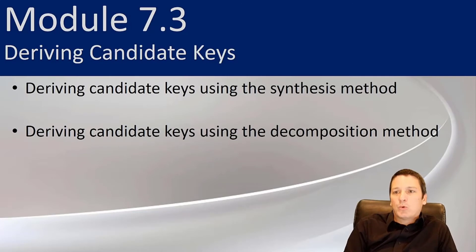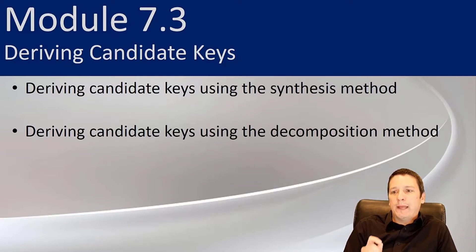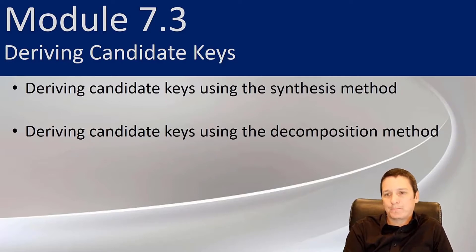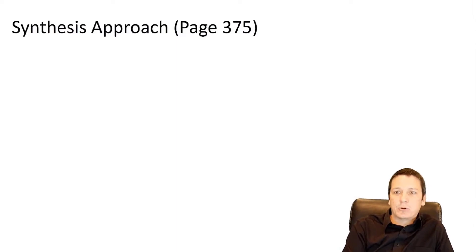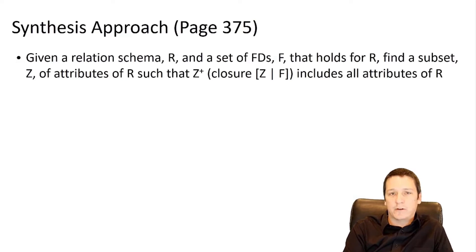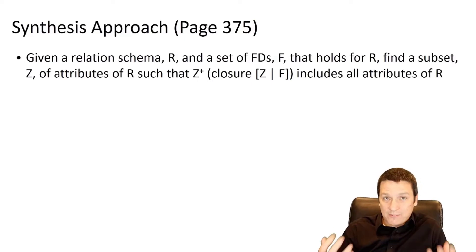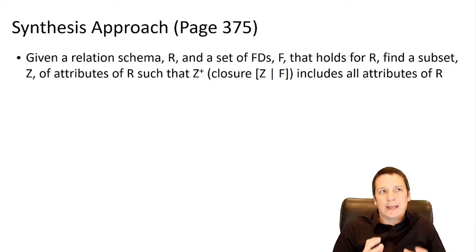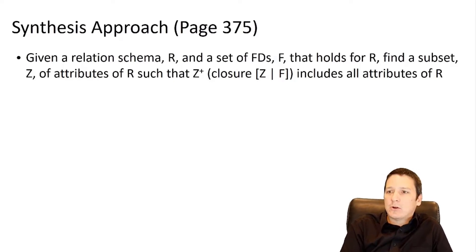In module 7.3 we're going to look at deriving candidate keys. We're going to start with a relation and a set of functional dependencies and identify what attribute or attributes make up a valid candidate key. We'll use two approaches: the synthesis method and the decomposition method. The synthesis approach is described in detail on page 375 of your book.